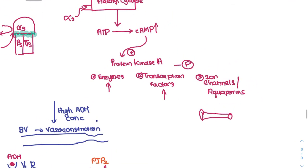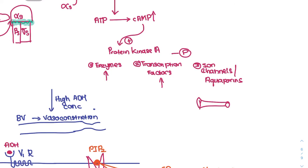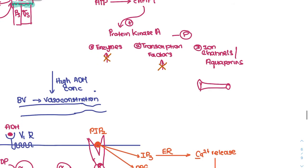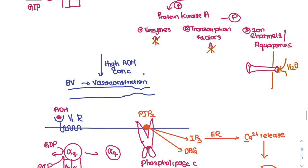ATP is made up of three high-energy phosphates. Protein kinases add a phosphate group to enzymes, transcription factors, or ion channels. In this case of ADH action, we need to get more aquaporins to the membrane — this allows water to move inside the cell.